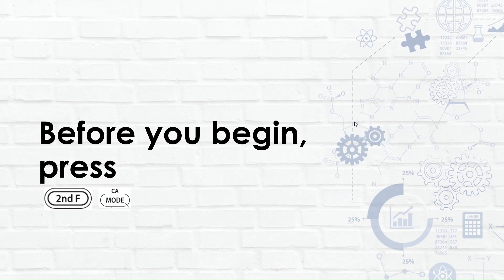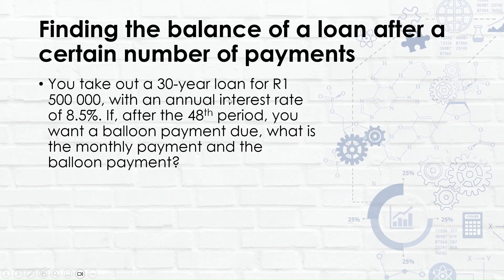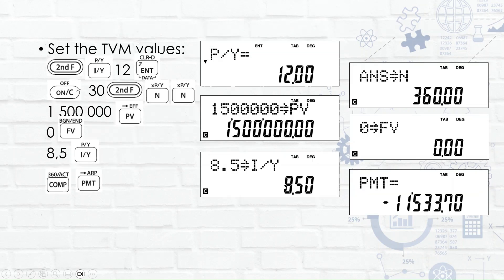Let's clear away the old TVM values using second function mode to make space for our second example. Our second example is about finding the balance of a loan after a certain number of payments. You take out a 30-year loan for 1,500,000 rand at an annual interest rate of 8.5%. If you decide after making your 48th payment that you want to make a balloon payment, what are your monthly payments and what is the balloon payment? We'll set up our TVM values again.